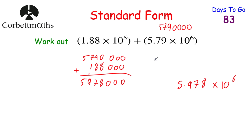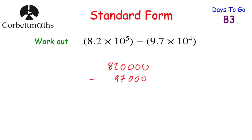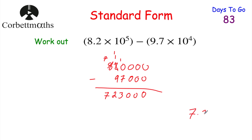Here's a subtraction for you to try. 8.2 × 10⁵ − 9.7 × 10⁴: write them out — 8.2 × 10⁵ = 820,000 and 9.7 × 10⁴ = 97,000. Subtracting: 820,000 − 97,000 = 723,000. In Standard Form: 7.23 × 10⁵.